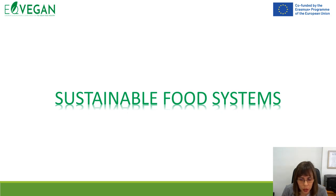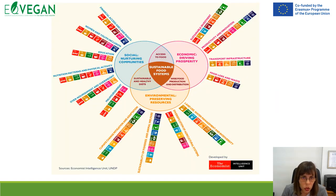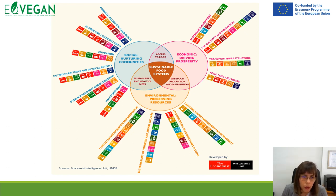Moving to sustainable food systems, when discussing processing we also need to think about complete production. Sustainable food systems require joint efforts on the societal part — nurturing communities — the economic path of driving prosperity, and the environmental part of preserving resources. We need to think about sustainable and healthy diets, access to food, and wise food production and distribution, with interlinkages across all the SDGs.